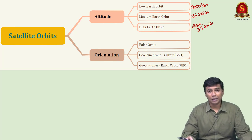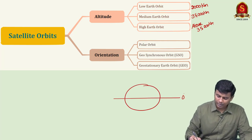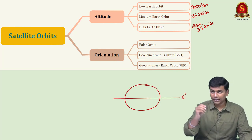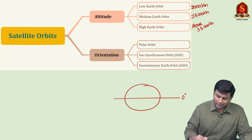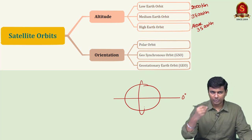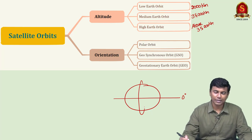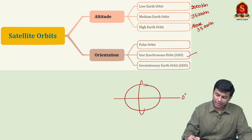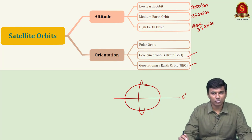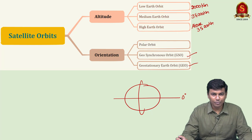A polar orbit satellite orbits from north to south or south to north — from pole to pole. Coming to geosynchronous (GSO) and geostationary earth orbit (GEO): what is the difference between the two?